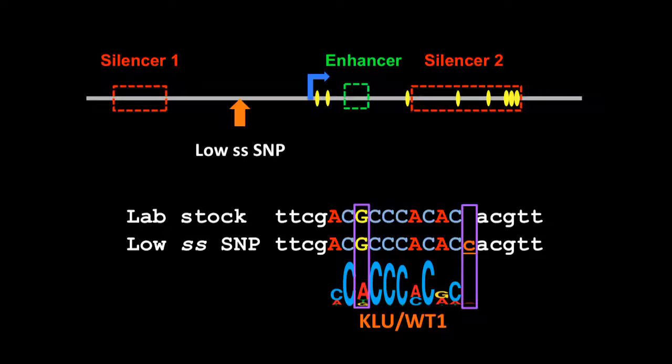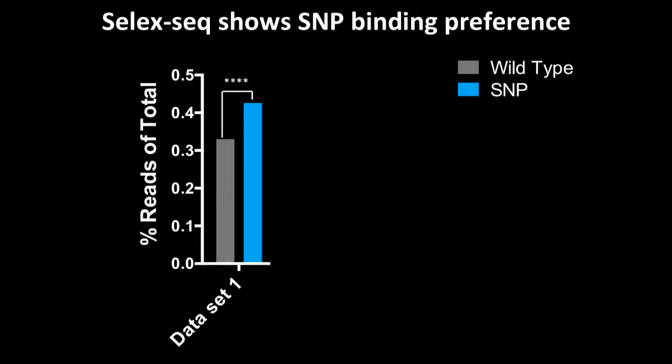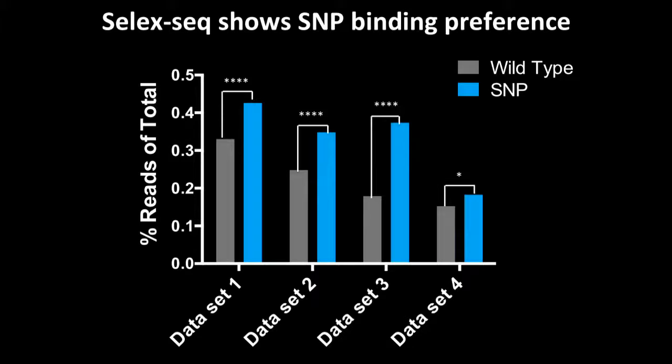To get at this question, we analyzed some pre-existing select-seq data that people did for clue. What we found is that clue seems to prefer sequences that contain the low spineless SNP. We saw this for one data set as well as the other three, again, suggesting that clue binds better in the presence of the low spineless SNP.